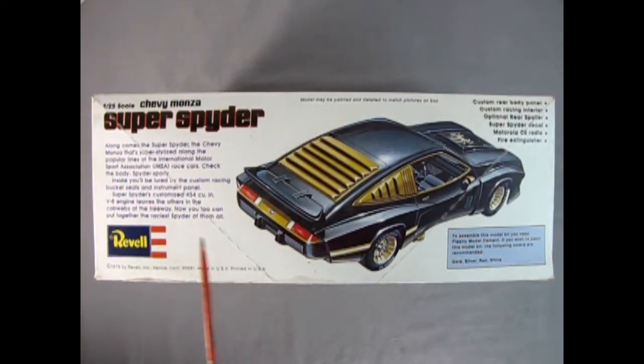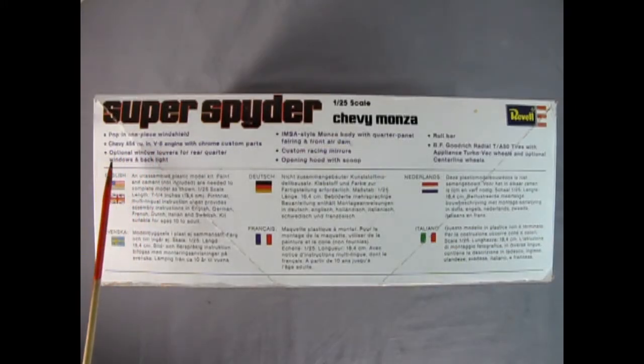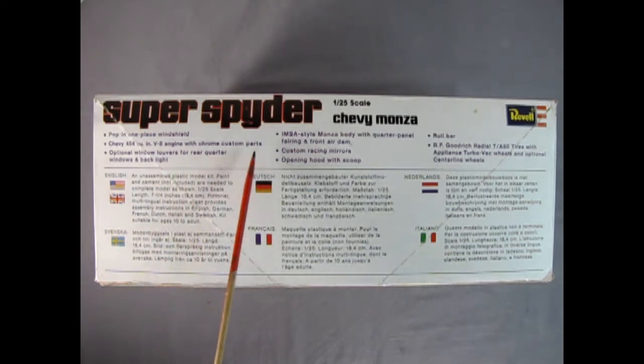Our Super Spider includes custom rear body panel, custom racing interior, optional rear spoiler, Motorola CB radio and a fire extinguisher. The model also includes a pop-in one-piece windshield, Chevy 454 cubic inch V8 engine with chrome custom parts.